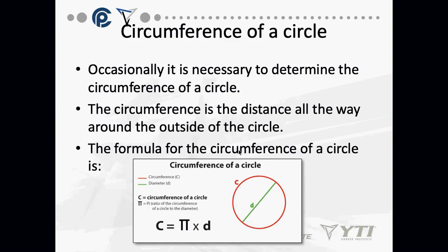Circumference — the total distance around the outside of a circle — uses the formula circumference equals pi times diameter. When would you need the circumference? Think about round ductwork — if installing it in an attic, you need to figure out how much insulation to purchase. The insulation is flat, and you need to know how much to buy to wrap it around the circular object.